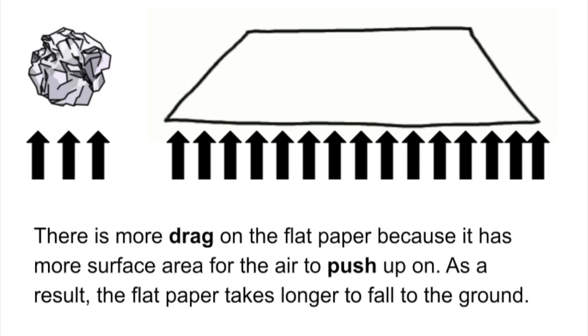As you can see in this diagram here, drag only has so much area or places that it can push up on the wadded up paper ball. It's smaller, it's compact. There's not much room for air to push on it. But if you look at that flat piece of paper, there is lots of area, lots of space for air to push on it. And that was why it fell so slow.